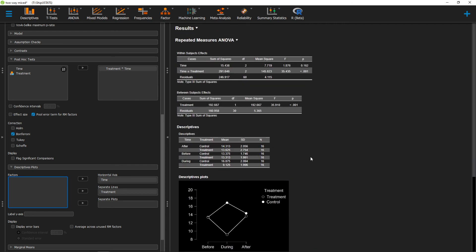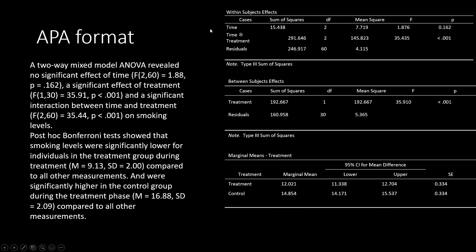Now that we have all of this information, we can go ahead and write up our results in APA format. We're going to have to present the reader with the results of our ANOVA tables and make sure the reader knows we ran a two-way mixed model ANOVA. So here: a two-way mixed model ANOVA revealed no significant effect of time, a significant effect of treatment, and a significant interaction between time and treatment on smoking levels. For each of those effects, I have my degrees of freedom between and within, my F value, and my p-value.